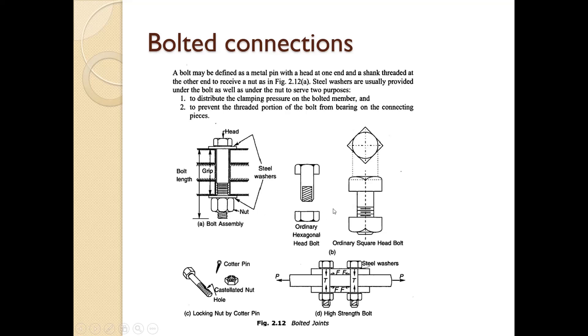Here you can see the ordinary hexagonal head bolt which we are familiar to, or we are watching in day to day life. This is ordinary square head bolt. This is locking nut by cotter pin. This is the cotter pin we used to lock here, and this is the castle nut. And this is the high strength bolt. Basically in high strength bolt, the nut and bolt assembly has been tightened so much that it is transferring the load by the friction itself.